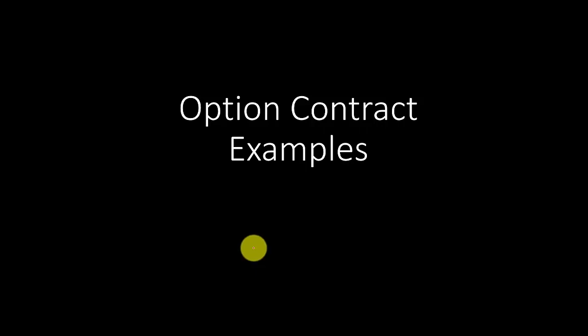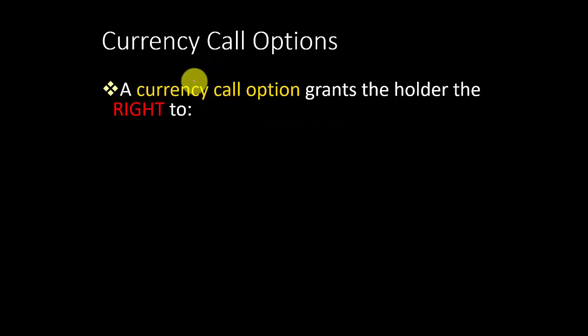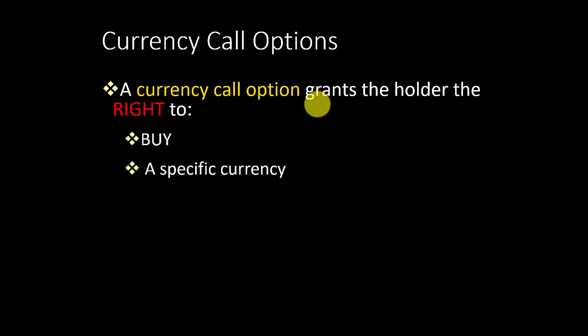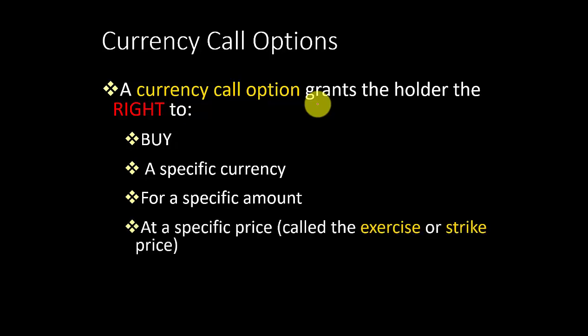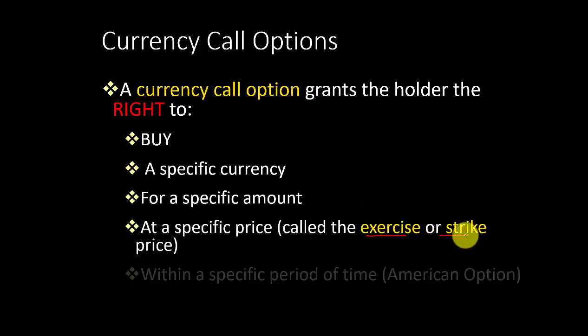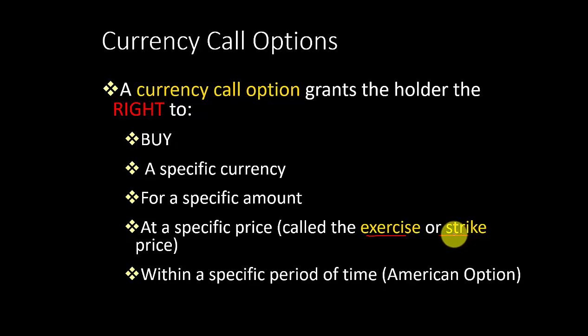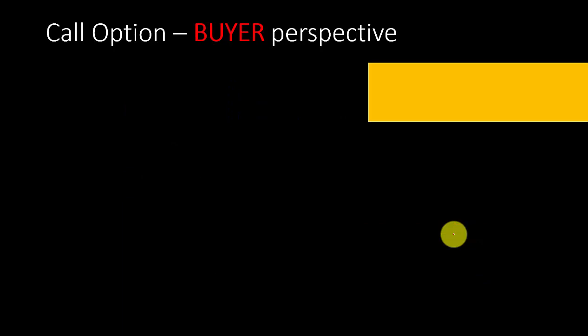Hello everyone. In this video we will work on an option contract example. First of all, let's look at currency call options. A currency call option grants the holder the right to buy a specific currency for a specific amount at a specific price — normally called the exercise or strike price — within a specific period of time, applied to the American option. Let's look at one example.